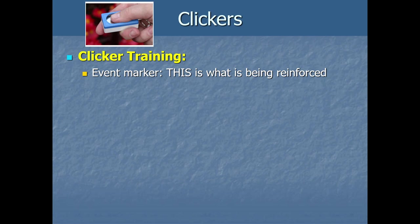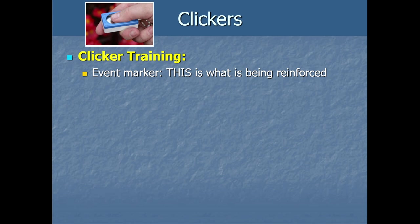A clicker can work as an event marker: by happening right at the instant of the desired behavior, it communicates clearly what is being reinforced. Think of it this way — if it takes five full seconds to grab a piece of food after a dog sits and then deliver it, the dog might not associate the food with sitting. It might associate the food with whatever it did in those five seconds — maybe scratching its side or something else entirely. That delay can really slow down learning. We want reinforcement that occurs immediately after the behavior to maximize how quickly the association is made between the behavior and the reinforcing consequence.